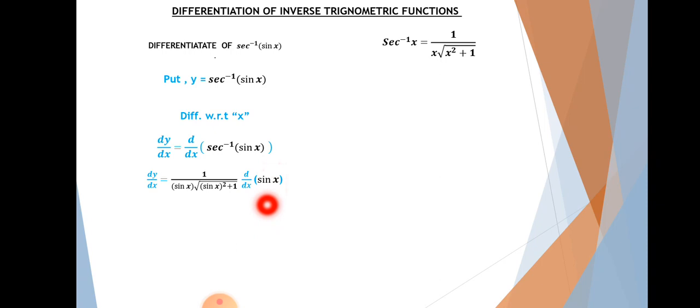Because for trigonometric functions, we have three types of derivatives: one with power, another without power, and another with angle. Now there is no power here. This is the simple formula for sec inverse. We have to multiply this by the derivative of the angle.